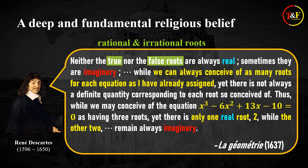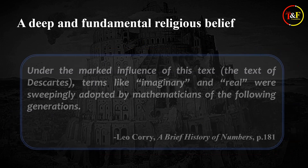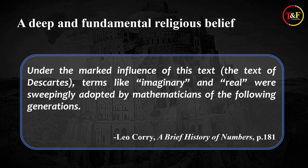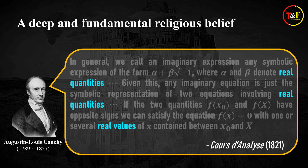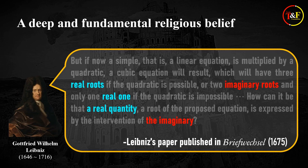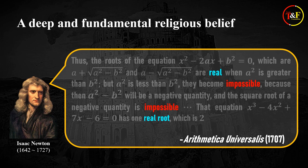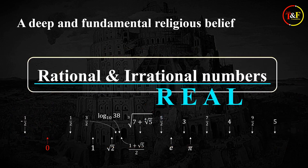With this, the Israeli philosopher of mathematics Leo Corry says the following: "Under the marked influence of this text, terms like imaginary and real were sweepingly adopted by mathematicians of the following generations." As I just showed you, Newton, Leibniz, Euler, and Cauchy all used the word real in the same manner as Descartes did. Also, all of them except Newton used the word imaginary too. As for Newton, he used the word impossible instead of imaginary. So we know that all of them already referred to rational and irrational numbers as real in the literal sense of the word.